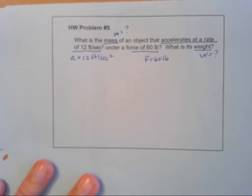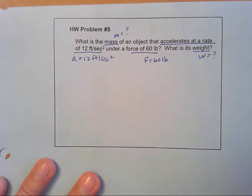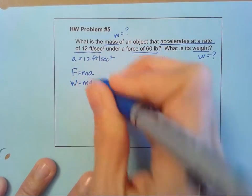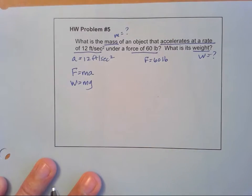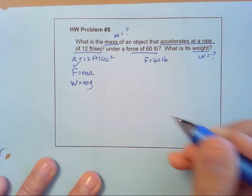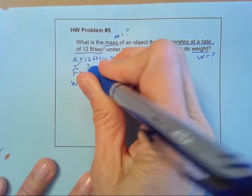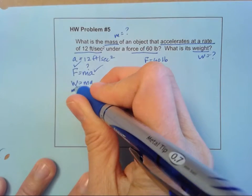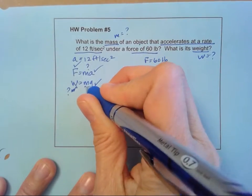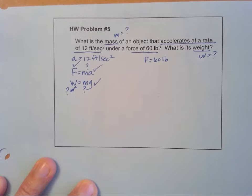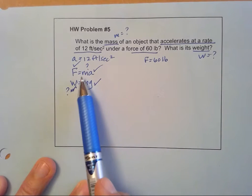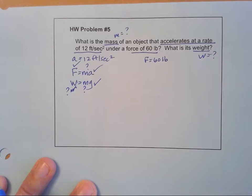Let's go to our two equations, F equals MA, and W equals MG. In this case, we know F, we know A, we don't know M. We know G, and we don't know W. So instead of starting with the W equals MG equation here, we're going to have to start with the F equals MA one, because we don't know W in this case. So we're going to have to solve for our mass using our F equals MA equation.